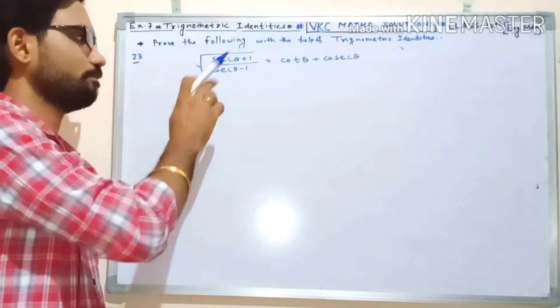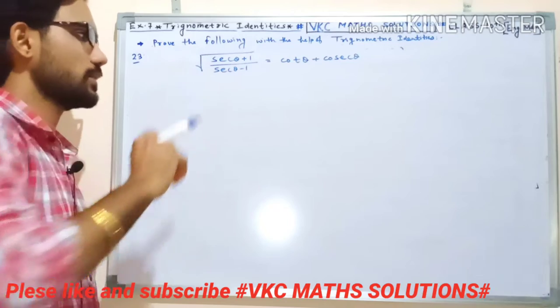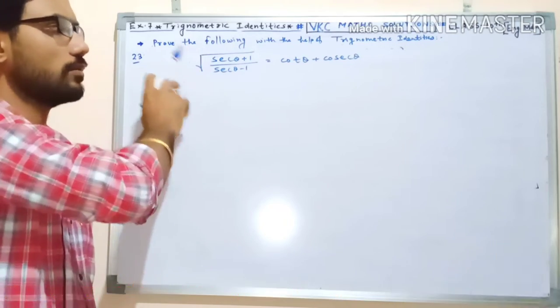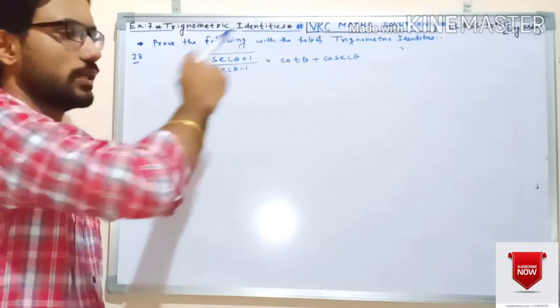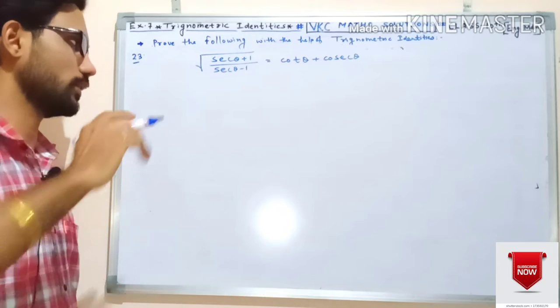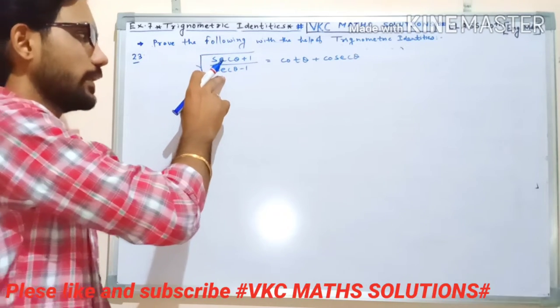Exercise 23: we have √(secθ + 1) / (secθ − 1) and we need to get the answer cotθ + secθ. So for this, we will rationalize.